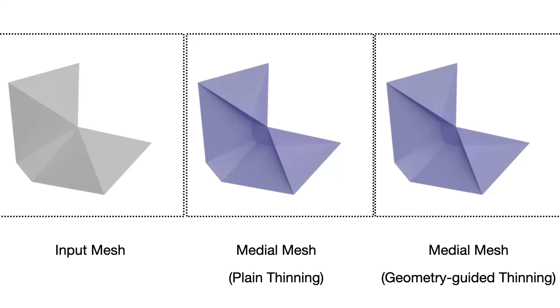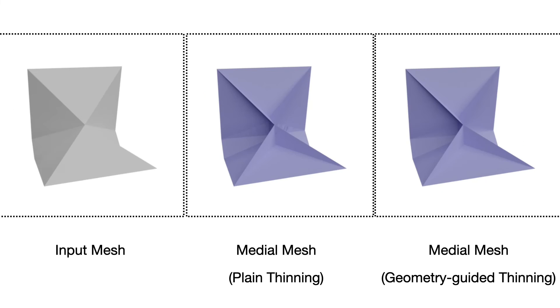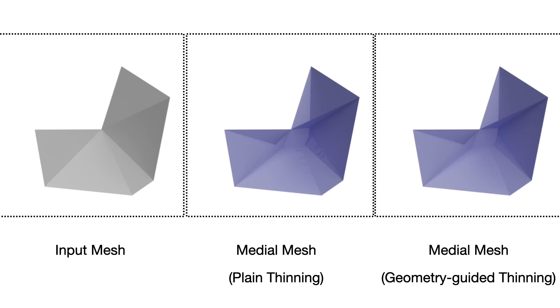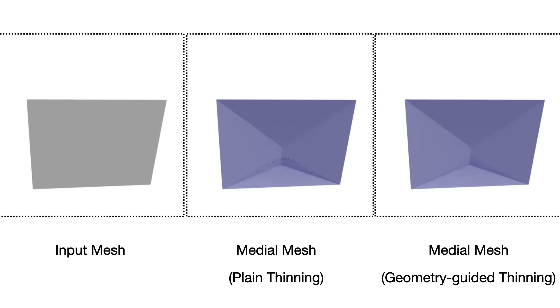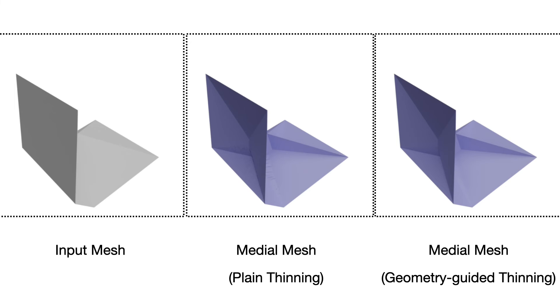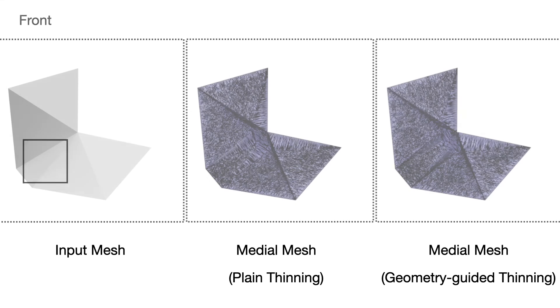We also give an analysis of our geometry-guided thinning algorithm. The plain thinning algorithm prunes tetrahedrons by removing simple pairs randomly. We found this operation routinely produces open pockets even though the topology is correct.